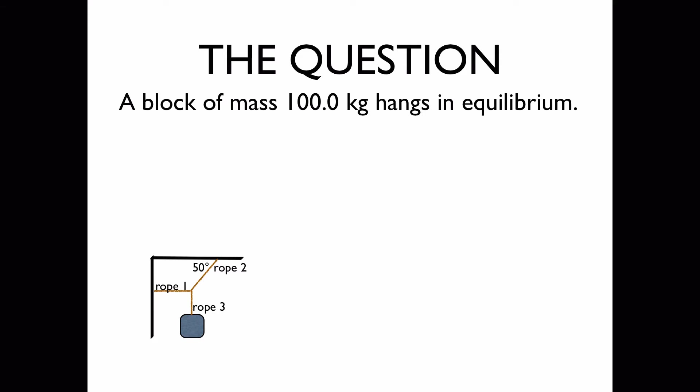The question. We have a block of mass 100 kg that hangs in equilibrium, supported by the three ropes as shown in the diagram below. We'd like to know, what are the tensions in rope 1 and rope 2?